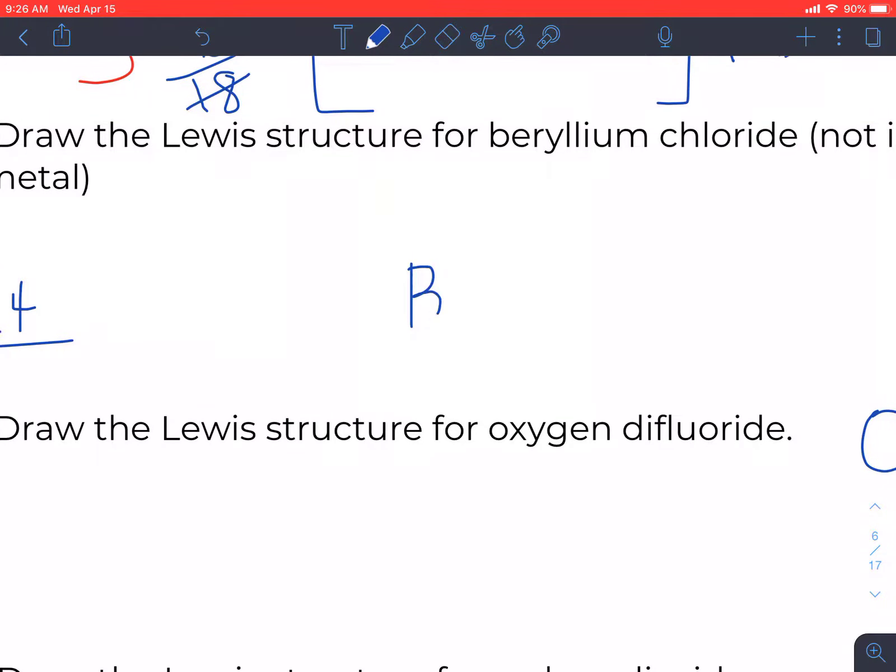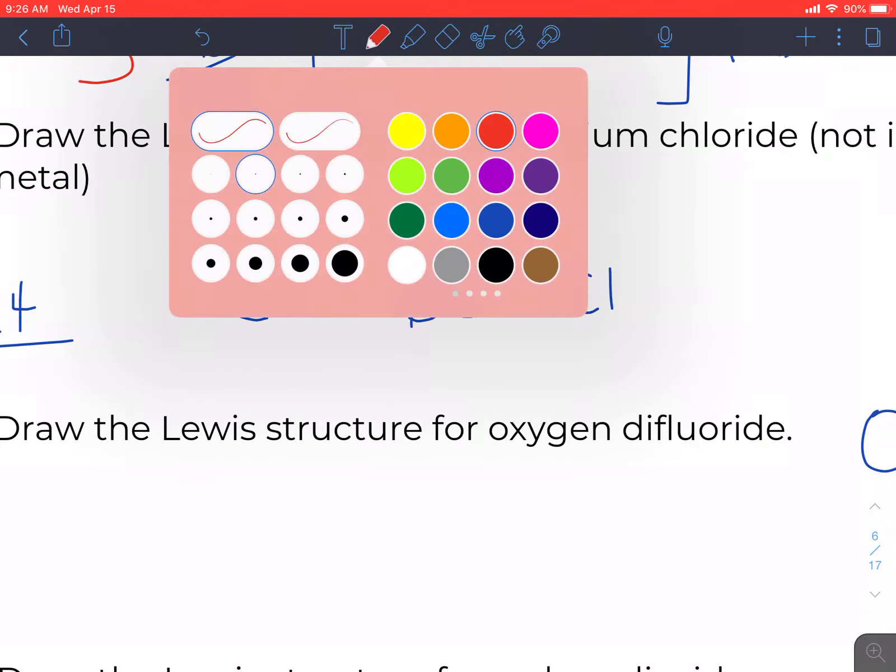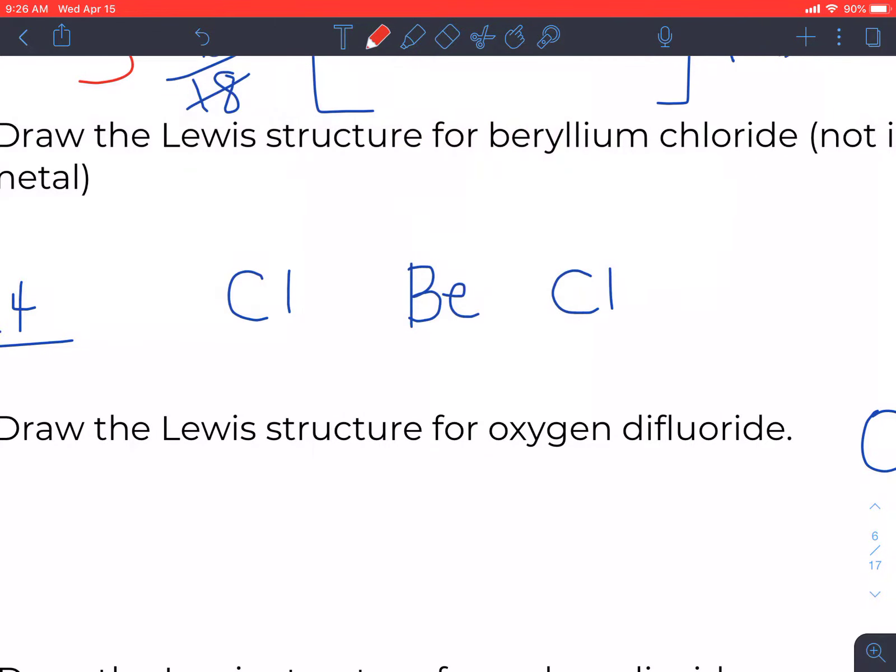So beryllium is in the middle because it's the lesser of the two, chlorine and chlorine are on each side. And you might hear my dogs bark here in a minute. Go ahead and make your initial bond, so of the 16, we use 2, 4.